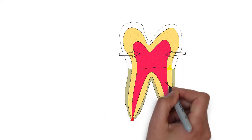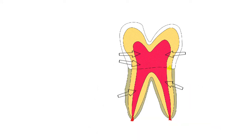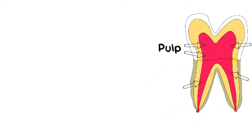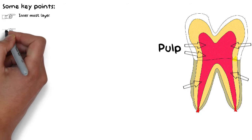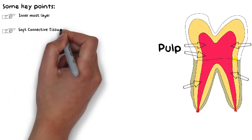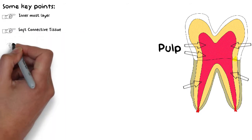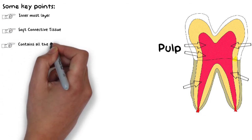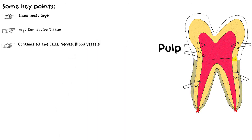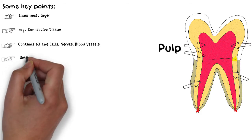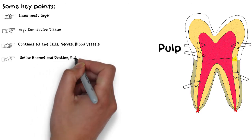The innermost layer of the tooth is known as the pulp. The pulp is not a hard tissue like enamel and dentine — it is actually a soft connective tissue that fills the inside of the tooth. The pulp is where all the blood vessels, nerves, and cells of the tooth lie, and it is the reason why we feel pain or pressure in our teeth. Unlike enamel and dentine, the pulp is a highly vascular structure.